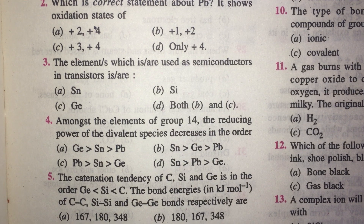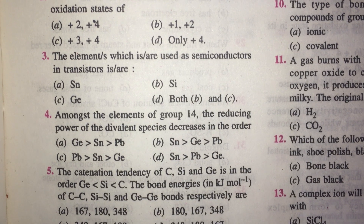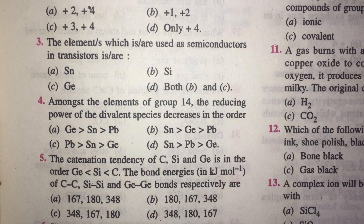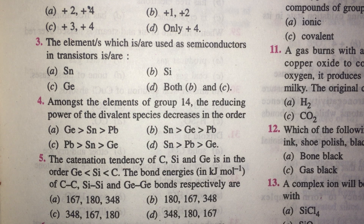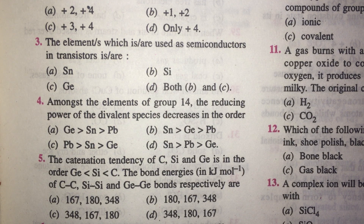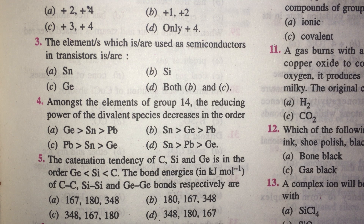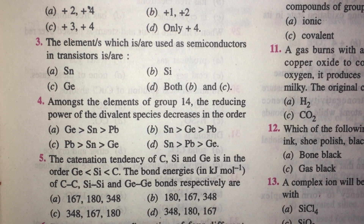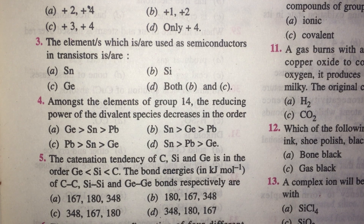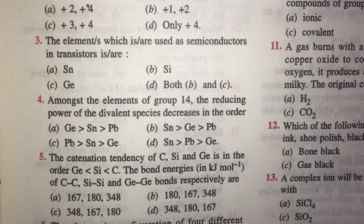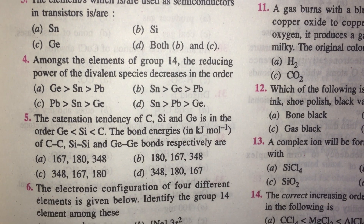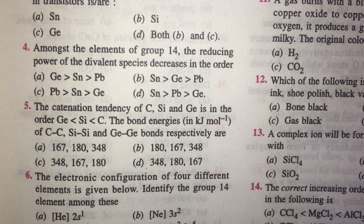The catenation tendency of carbon, silicon, and germanium is given in order. The greater the catenation, the greater the X–X bond energy. So the answer to this question must be D: the C–C bond energy must be highest and Ge–Ge must be least.